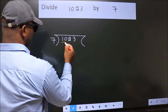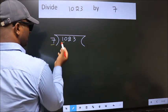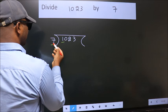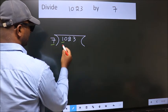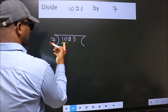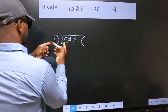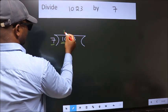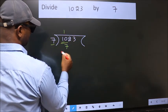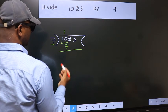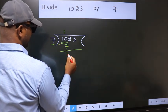Here we have 1. Here 7. 1 smaller than 7. So, we should take 2 numbers. 10. A number close to 10 in 7 table is 7 once 7. Now, we should subtract. We get 3.